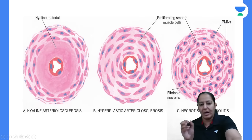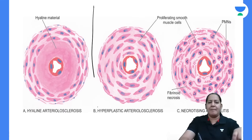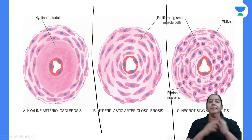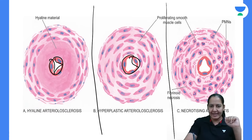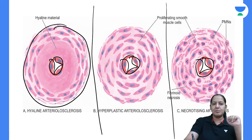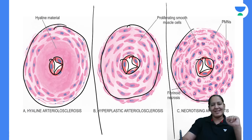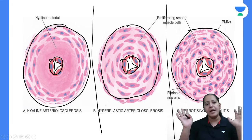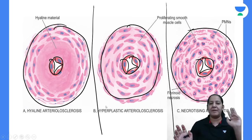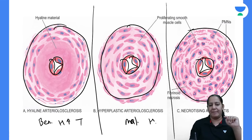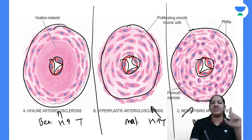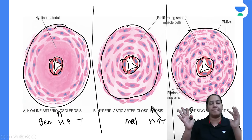In malignant hypertension, there are two possibilities. The first is hyperplastic arteriosclerosis. Because blood pressure in the lumen is more than 200/120 mmHg, this constantly exerts pressure on the vessel wall. As an adaptation, the smooth muscle cells present in the media undergo hyperplasia — they divide and increase in number. After proliferating, they arrange themselves in concentric laminated layers, giving an appearance similar to the layers of an onion — known as onion skin appearance.